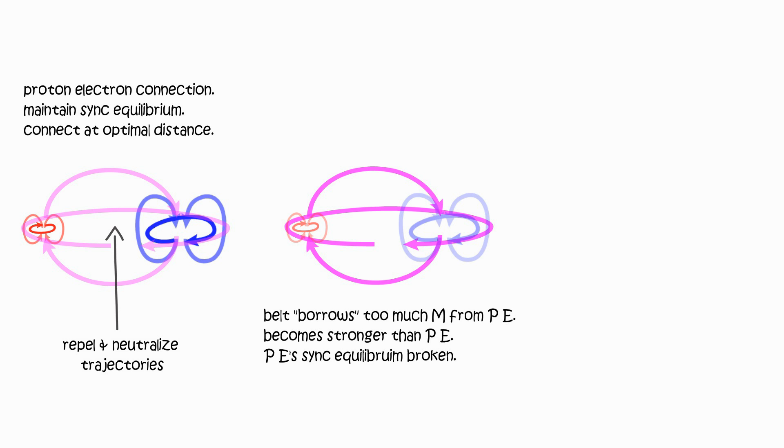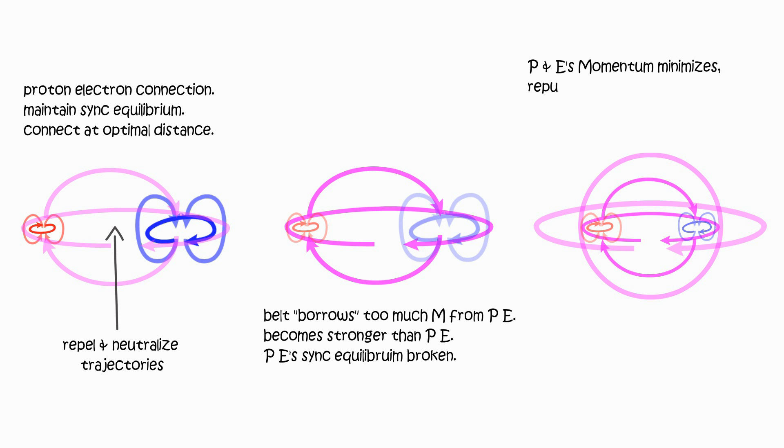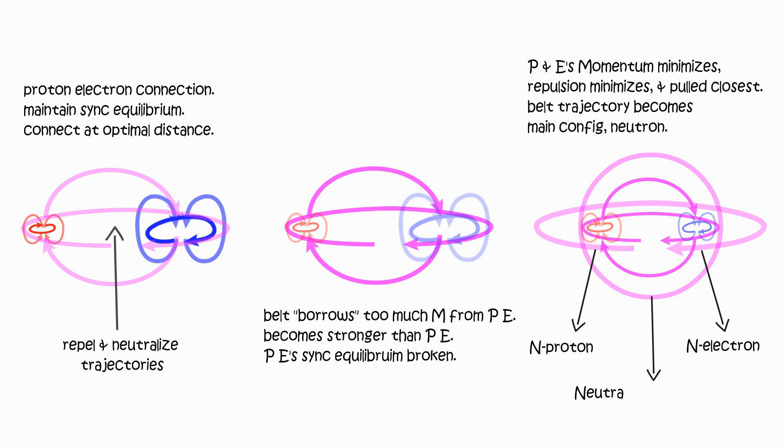That belt borrows so much momentum from proton electron, that it becomes stronger than proton electron, and reluctant to return momentum. Maximizing belt attraction, minimizing coarse repulsion, proton electron get put together and fused. The belt becomes the main configuration, the neutron.